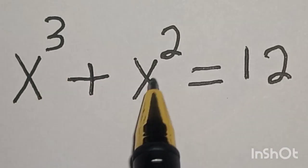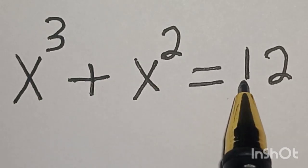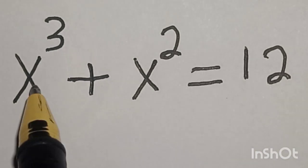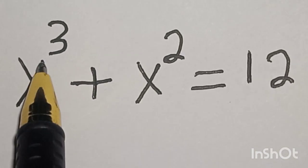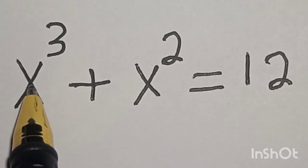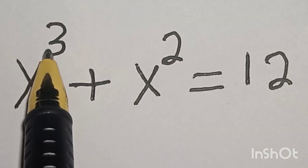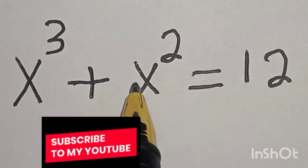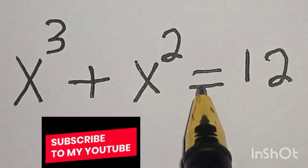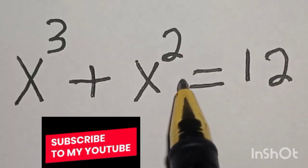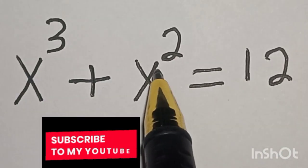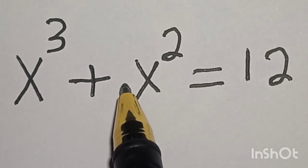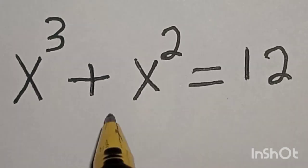Hi everyone, welcome to my class. In this class we want to find the value of s from this given equation: s raised to the power 3 plus s squared is equal to 12. Before we proceed, please don't forget to like, share, comment and subscribe. We're going to use a nice trick here so that we can get the value of s quickly.